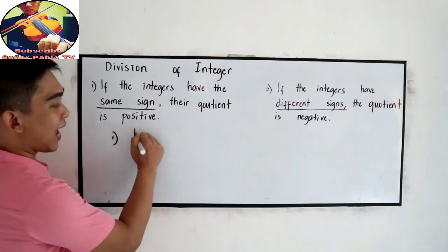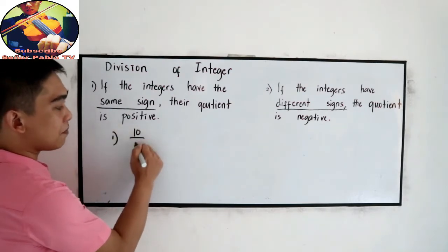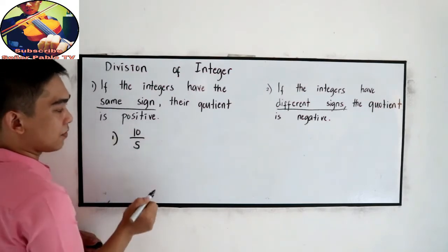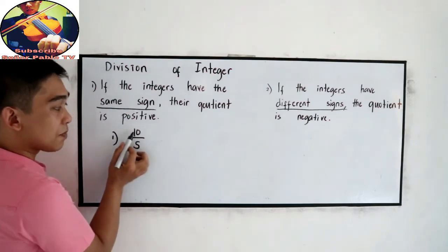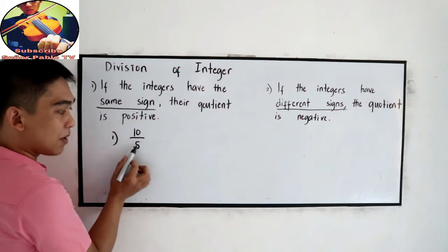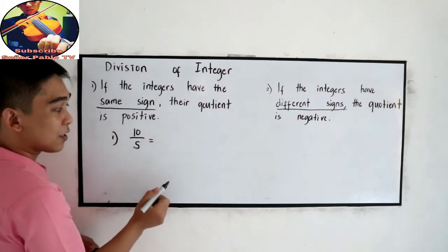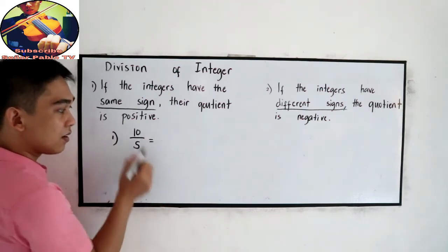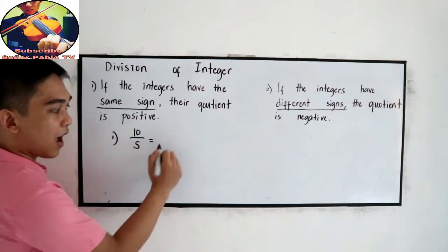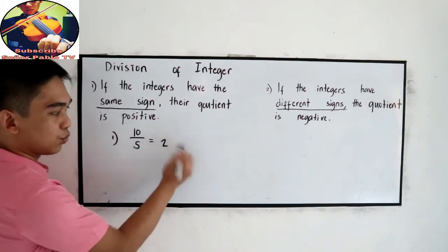Let's say 10 divided by 5. The numerator is positive, denominator positive. So that is positive — 10 divided by 5 is 2.